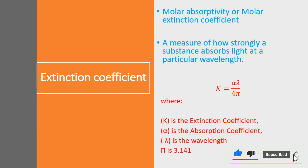First of all, what is the extinction coefficient? The extinction coefficient is also known as molar absorptivity or molar extinction coefficient. It is basically the characteristic that determines how strongly a substance or a species absorbs or reflects light at a particular wavelength.